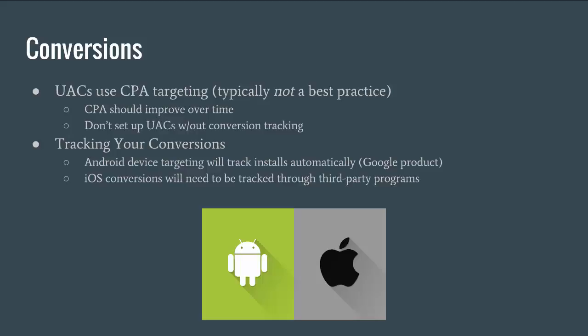You never want to set up UACs without conversion tracking — they use CPA targeting, so if conversion tracking breaks the algorithm can't work anymore. If your tracking breaks and you don't notice for three months, your campaign is essentially screwed. The algorithm thinks everything is terrible and doesn't know where to spend money. You'll have to create a new UAC campaign and reset it. Make sure your conversion tracking is always working, because if it doesn't you're going to have to start over from scratch.